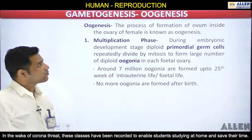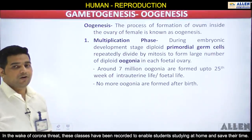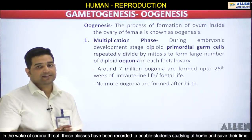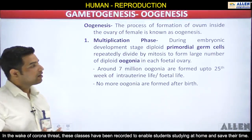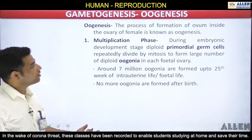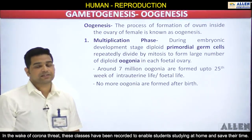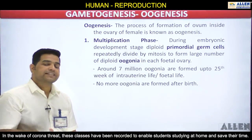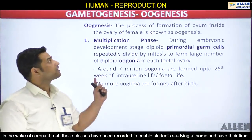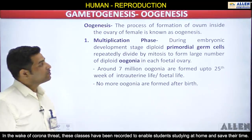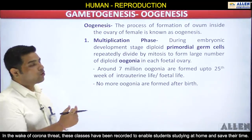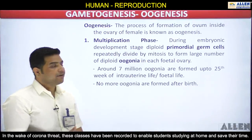Oogenesis is the second part of gametogenesis. We have already talked about the male reproductive system and spermatogenesis — the formation of a male gamete. Now we come to the female part, in which the formation of the female gamete takes place. Oogenesis means the formation of an ovum inside the ovary of a female.